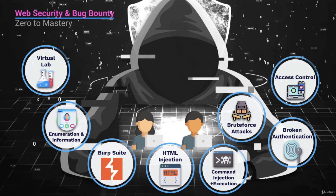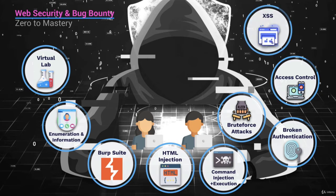We then talk about broken access control. Access control enforces policies such as what a user can and cannot do, or intended permissions for a user. When that access control is broken, we can take advantage of it. Then we dive into cross-site scripting, which is a very common attack. We're going to talk about all three main types: stored, reflected, and DOM-based cross-site scripting.